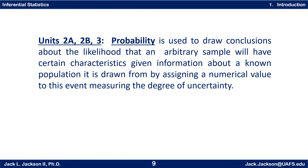Units 2a, 2b, and 3 were all about probability. Probability is used to draw conclusions about the likelihood that an arbitrary sample will have certain characteristics given information about a known population, by assigning a numerical value to this event, measuring the degree of uncertainty. Unit 2a introduced the basic concept of probability working with discrete sample spaces. Unit 2b continued to look at discrete probability, detailing several important discrete distributions — most significantly, binomial and hypergeometric distributions, which will be used in this unit. Unit 3 discussed continuous distributions, most significantly normal, t, chi-squared, and F distributions, which are the ones we're going to need for this unit.